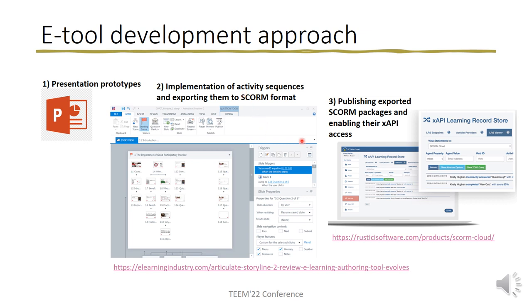The next step is based on the use of the Articulate Storyline application to complete the implementation of the different activity sequences and exporting these results to SCORM packages. The final stage will involve publishing exported SCORM packages and enabling the xAPI actors to access and record track user interactions.